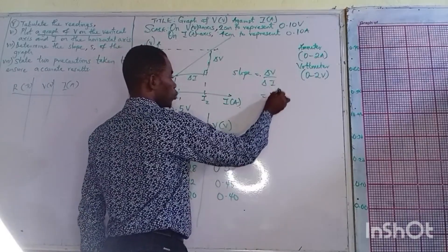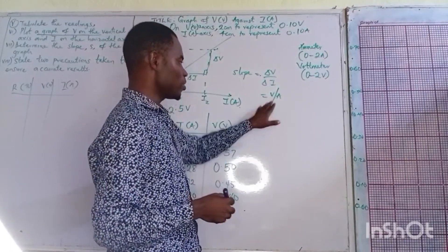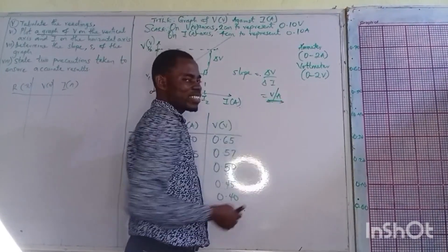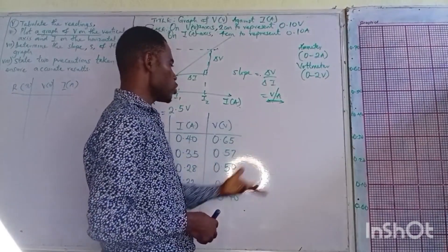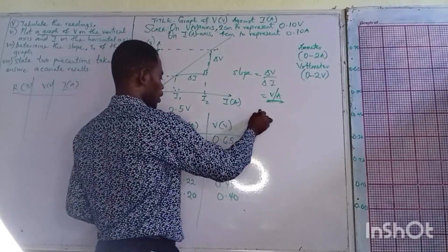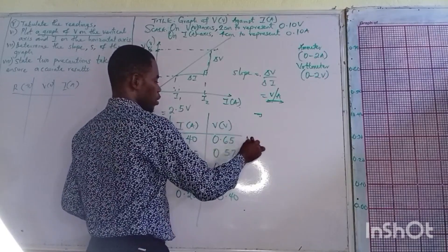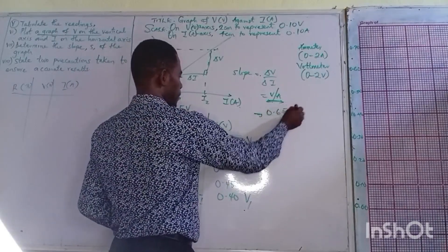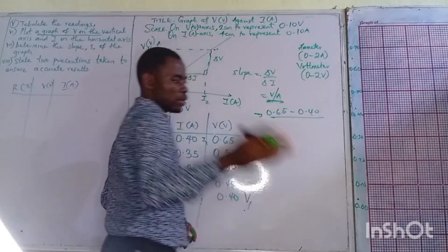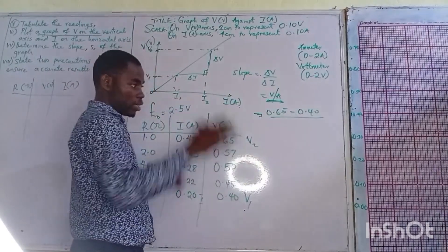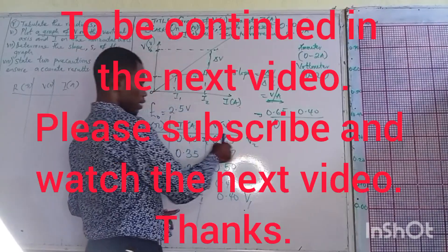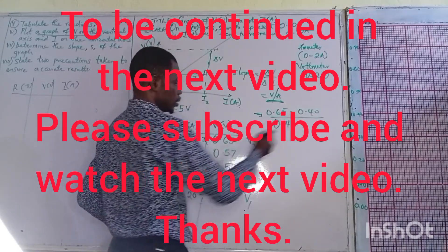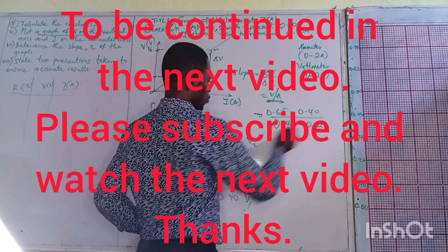At the end of the day, what would be my unit? My unit will be volt over ampere. Don't write ohms, don't jump. Write volt over ampere and that will be your unit. Leave the rest for the examiner to judge. If I want to use my values, this is V2, this is V1, this is I2, I1. I'll be having 0.65 minus 0.40 over 0.4. Please make sure you watch our video on graph.